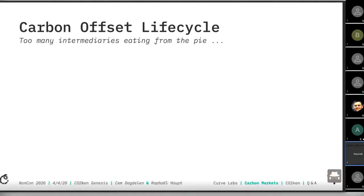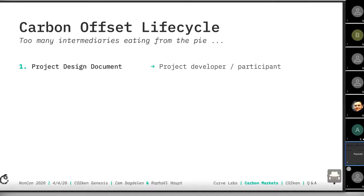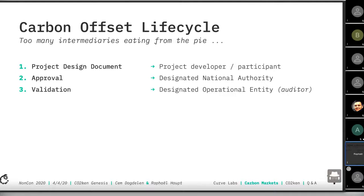Let's dive into a carbon offset life cycle — how are they created? You start with a project design document: how big is your project, how do you plan to measure it, what methodology will you follow? Then you need approval by a designated national authority. Then a third-party auditor — the designated operational entity, or DOE — to validate your project design document. Then you have the certifier, for example the UN Clean Development Mechanism or Gold Standard, who provide trust in the system.